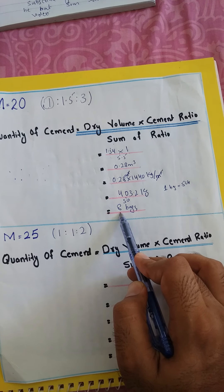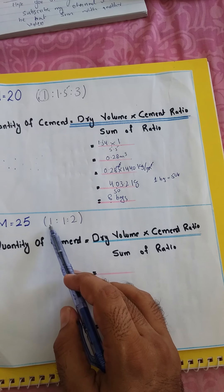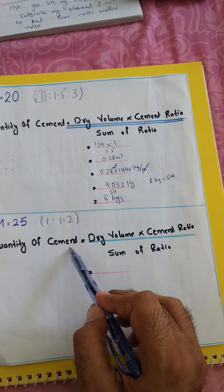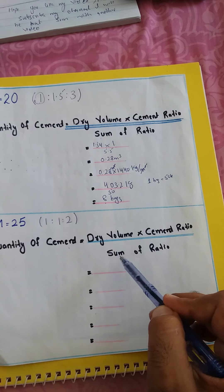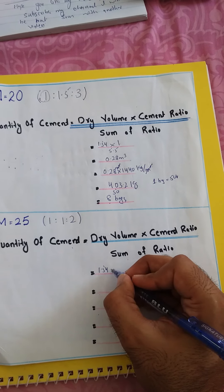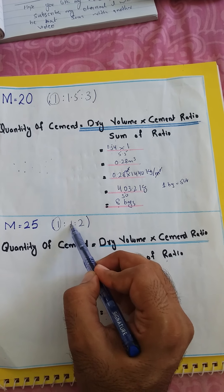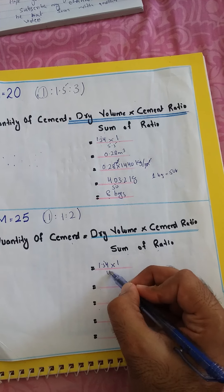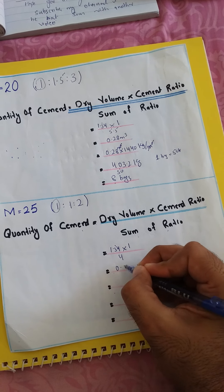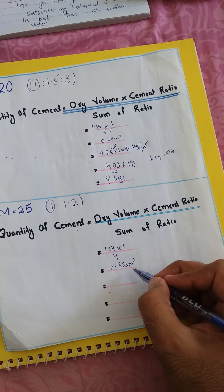Now we will work for M25 grade. M25 means a ratio of 1:1:2. The formula remains the same: quantity of cement equals dry volume multiplied by cement ratio divided by sum of ratio. Dry volume is 1.54 because we are working for one cubic meter, cement ratio is 1, and sum of ratio is 1 plus 1 plus 2, which equals 4.